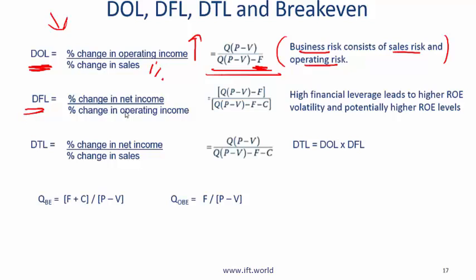Degree of financial leverage is the percentage change in net income over percentage change in operating income. Here the finance costs also come into play. To remember this formula, note that it is very similar to the DOL formula. The difference is that F, which stands for fixed operating costs, now also shows up in the numerator, and in the denominator you now add the interest costs. C stands for finance or interest costs.